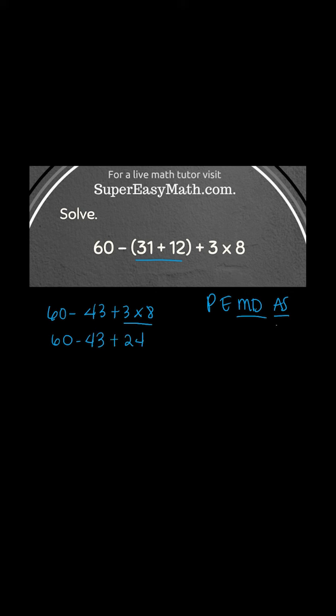Now I'm going to look from left to right. Do I have any addition or subtraction? Yep. That's all I have left, so I'm just going to work from left to right and do that. So 60 minus 43 is 17. Now 17 plus 24 is 41. So the answer to this problem is 41.